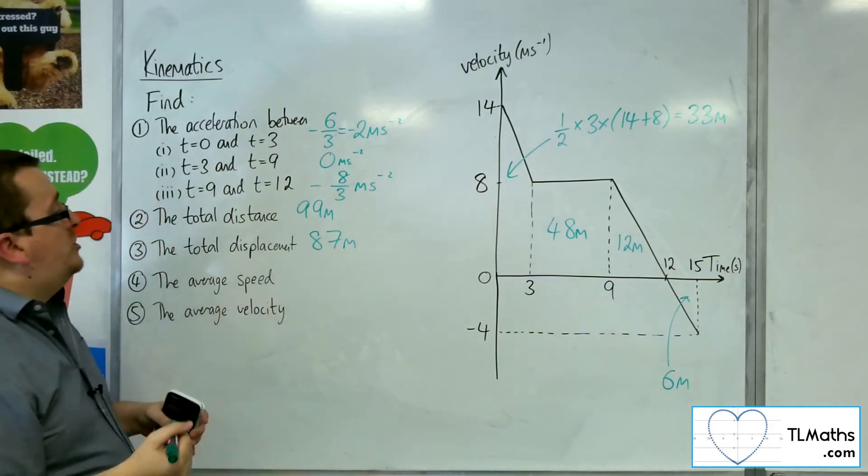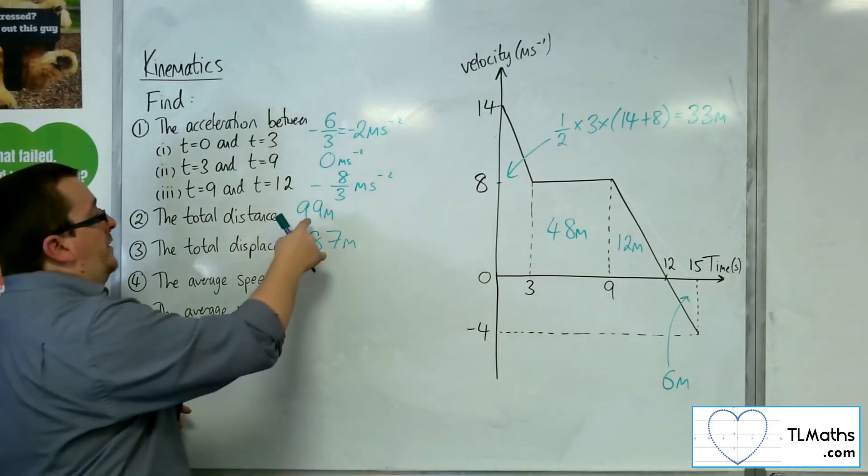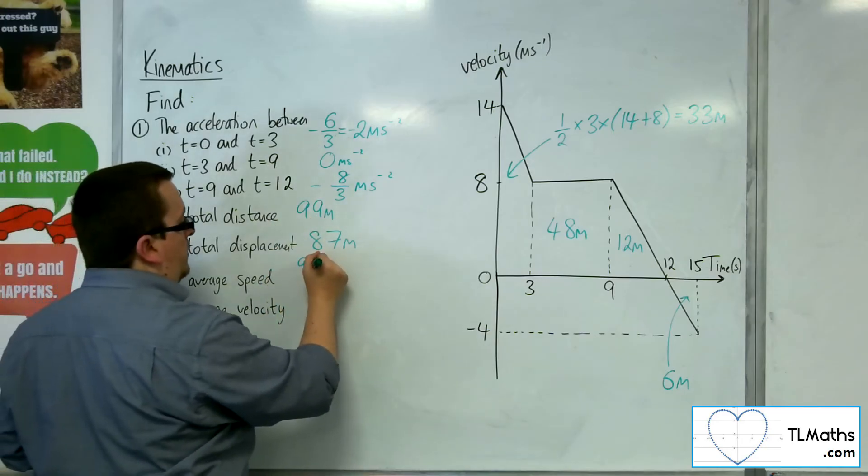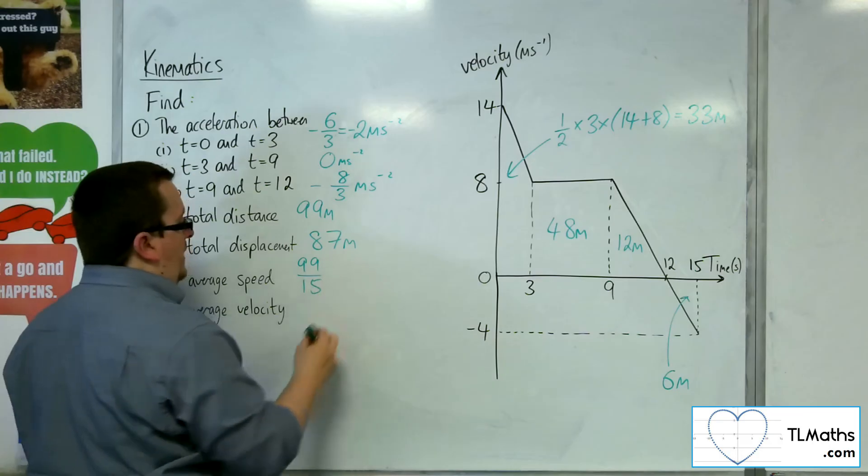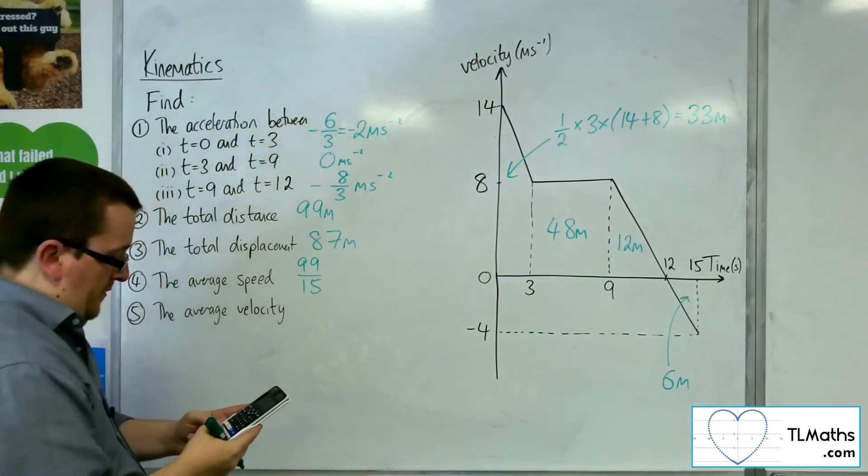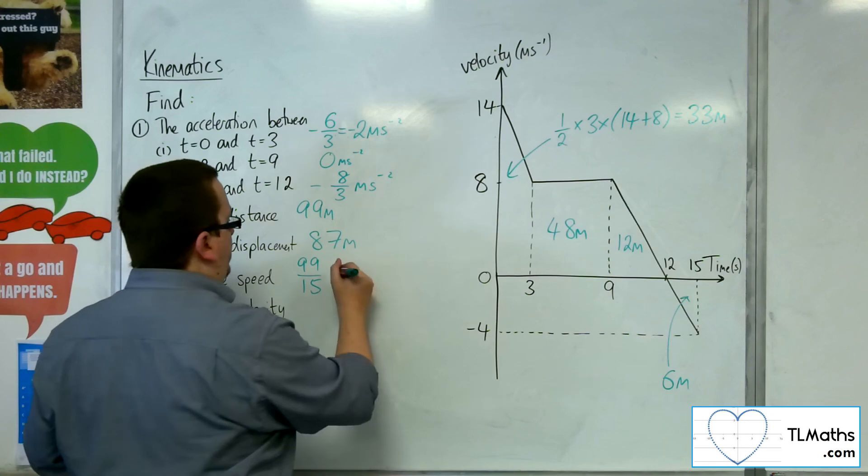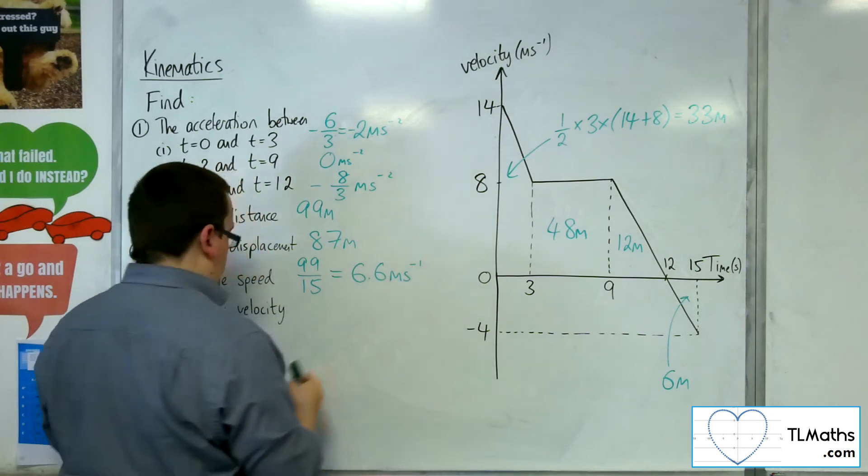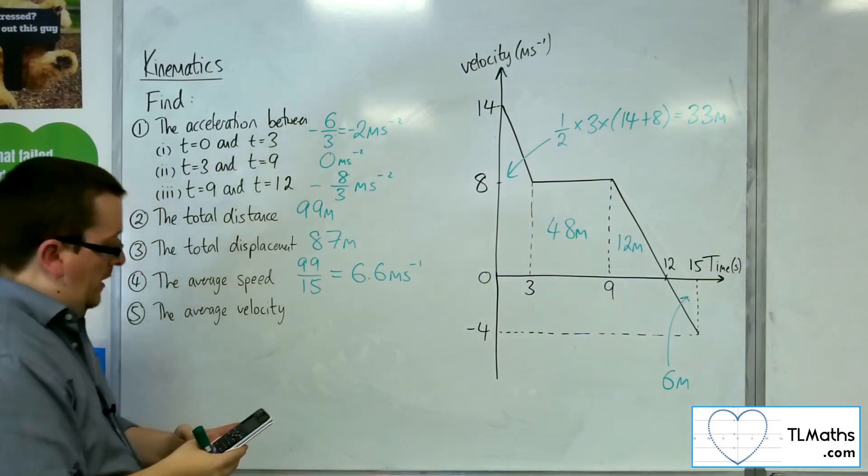Now the average speed is the total distance divided by the total time. So 99 divided by 15. So 99 divided by 15 is 6.6 metres per second.